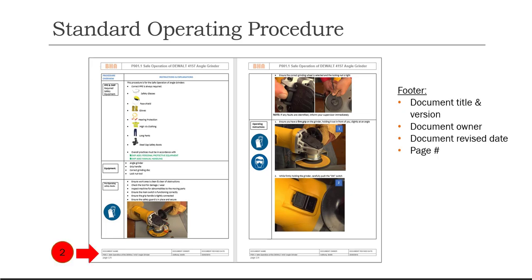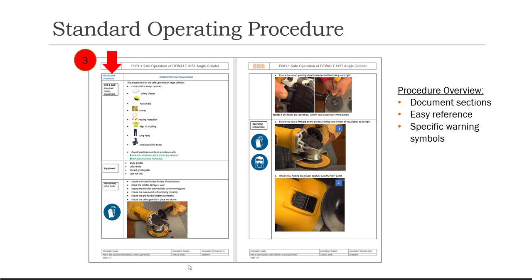The second part is the footer. This is where we list the document title, the owner of the document or the approver, and the document date. It's also important to show the page number and the total pages. The first column is the procedure overview. This is where the document categories are highlighted so we can navigate the sections of the document easily. It also serves as a document margin where we can place specific warning symbols to help us focus on specific tasks and the related concerns.